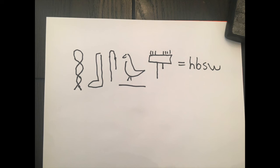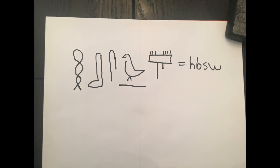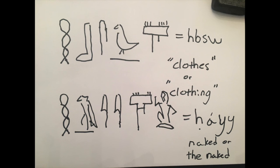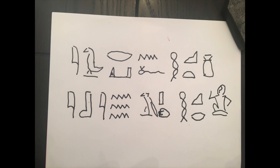Here's another one for you: 'habasu,' this means clothing. It's got the flax, the boot, the bolt of cloth, and then the W meaning a plural. So this is clothes or clothing — plural. If it didn't have the W, just 'habas,' it would be one item of clothing, but that's a bit like sheep and sheep. So followed up by 'ha'ai,' which is the naked — or those needing clothing, not like a nudist, but someone who lacks clothing. You'll see this in a lot of stelae where they say, 'I gave clothes to the naked.'